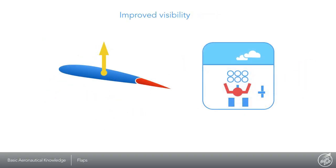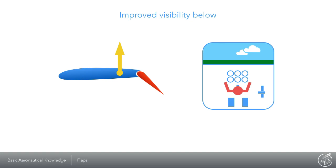With flaps down, the aircraft is able to maintain lift at lower nose attitude. This means that the pilot gets improved visibility down below, which is especially handy when landing.